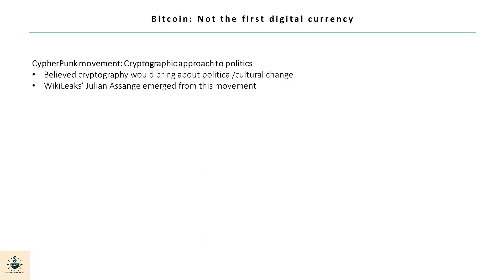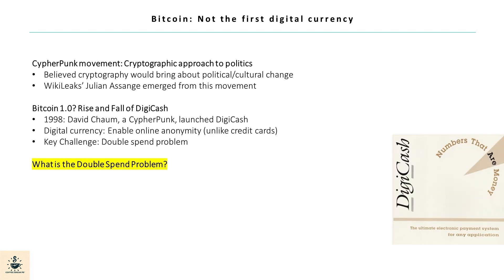Let's look at some key ideas related to Bitcoin. An important point to note is that Bitcoin was not the first attempt at digital currency — there were predecessors. The cypherpunk movement, which advocated using cryptography to affect cultural and political change, is one such example. Julian Assange, a prominent figure in this movement, is known for his journalism that challenges power structures. Another member, David Chaum, launched DigiCash. Although the currency enabled anonymity, it ran into the double spend problem, which is crucial to understand when studying the innovation of blockchain.